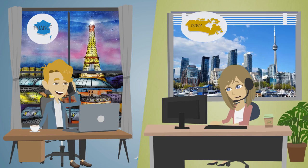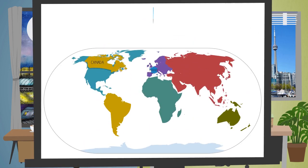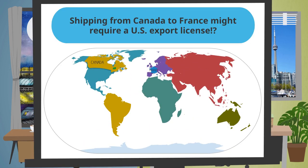Elsa replies: Hello François, my name is Elsa. Let me see. Unfortunately, your order has been placed on hold. It appears that we may need to apply for a license from the United States government before we ship. François responds: But you are shipping from Canada to me in Paris. Why would we need a license from the United States?